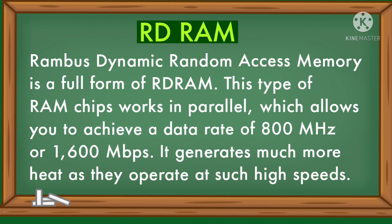RDRAM — Rambus Dynamic Random Access Memory — is the full form of RDRAM. This type of RAM chip works in parallel, which allows you to achieve a data rate of 800 MHz or 1600 Mbps. It generates much more heat as it operates at such high speeds.